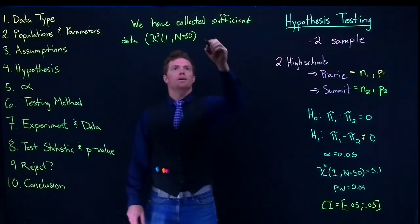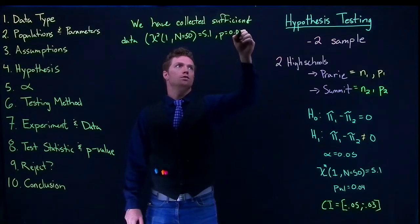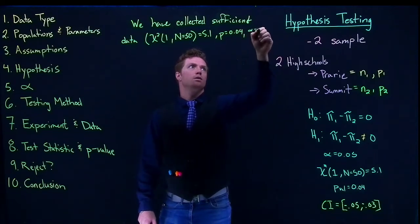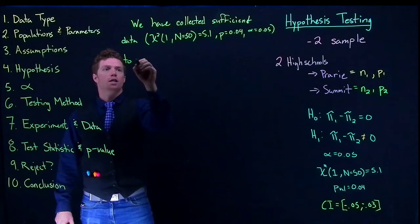And then we'll say that equals 5.1, p equals 0.04, alpha equals 0.05, to reject the claim.